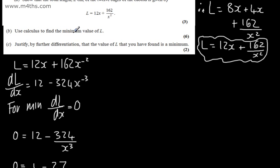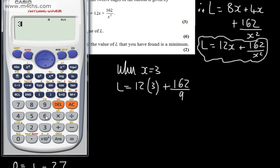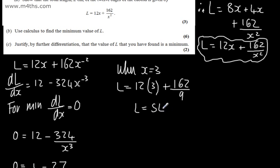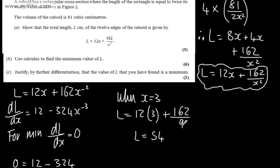So use calculus to find the minimum value of L. So what we can say at this stage is when x is equal to 3, L will be equal to 12 lots of 3 plus 162 over 3 squared, which is going to give me 9. So let's go ahead and work this out. So in the calculator, if you want to do that, it's 36 plus 162 divided by 9, and that's going to give me 54. So L is going to be equal to 54. So that gives us what we want, so L is 54, and we can say that the units are centimeters.